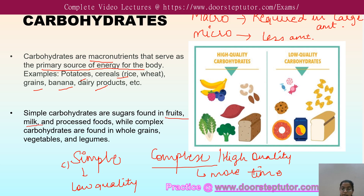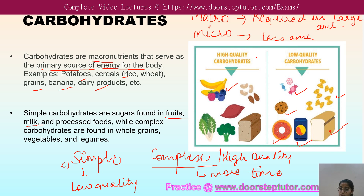Simple carbohydrates are found in fruits, milk, processed cheese, pasta, white bread, canned aerated drinks, and fast processed foods like donuts, cookies, and candies. Complex or high-quality carbohydrates are present in all kinds of fruits, grains, legumes, vegetables like sweet potato, broccoli, and kale, and also in multi-grain bread.